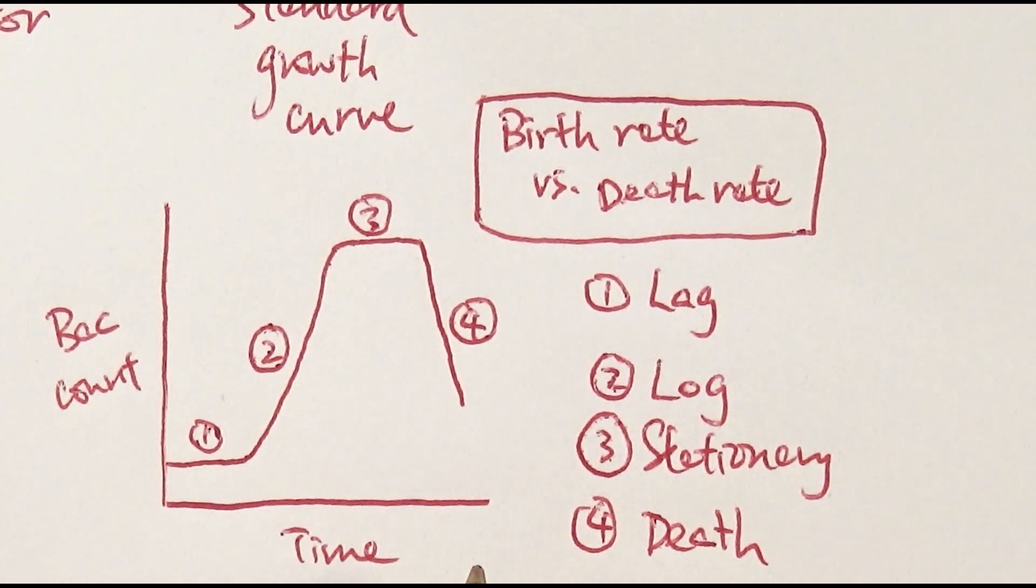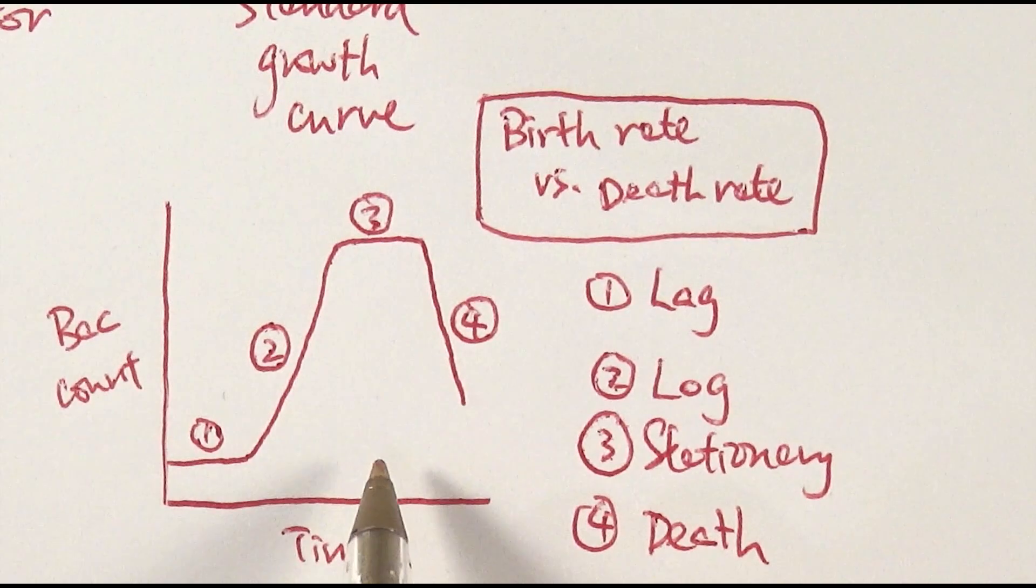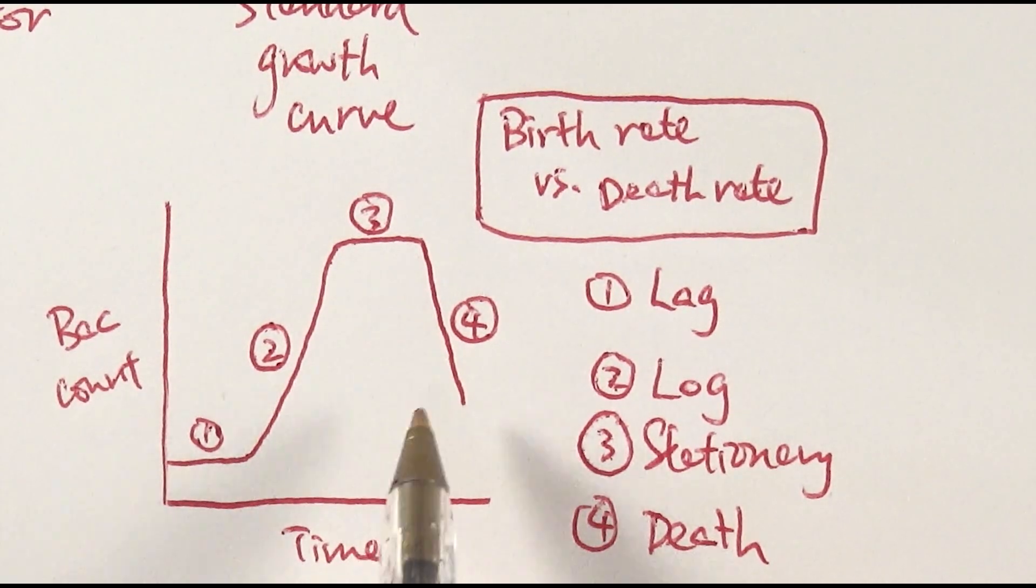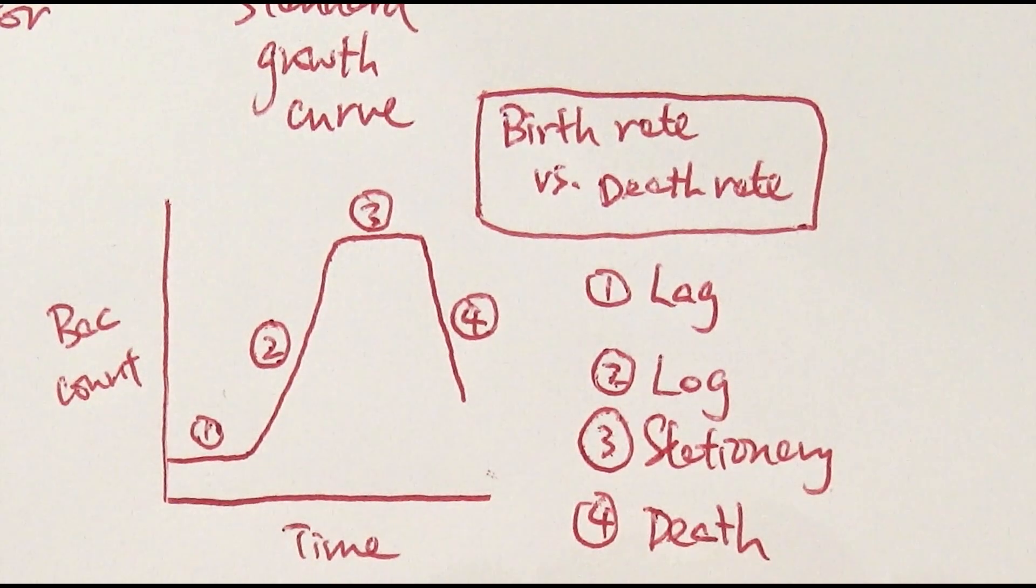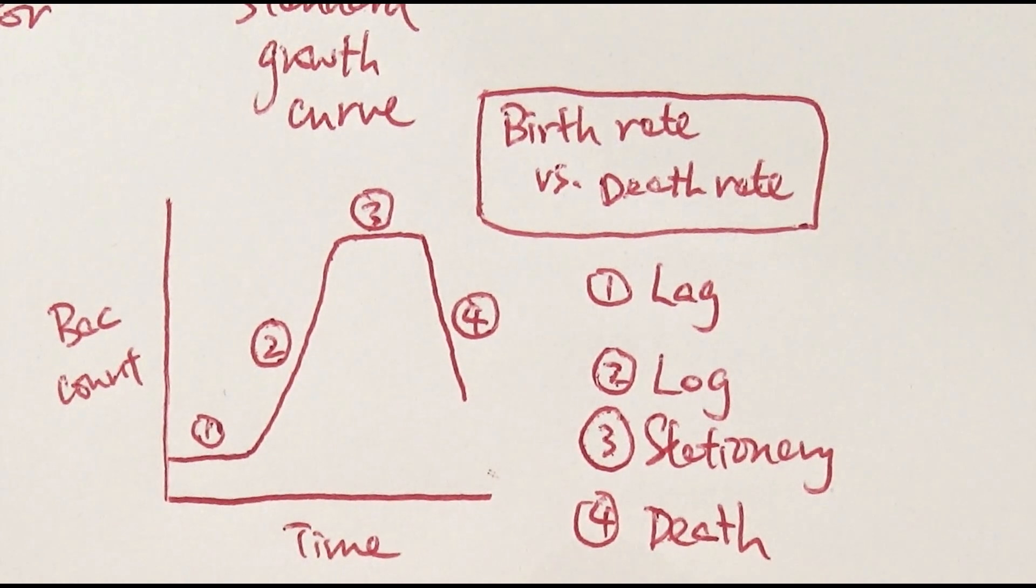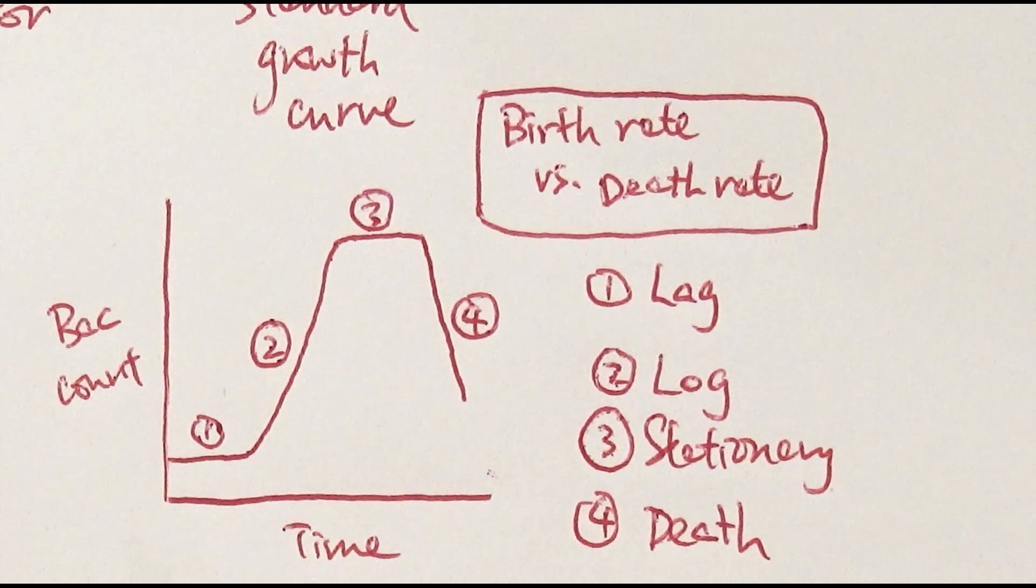This usually describes a batch fermentation. If it's in a continuous one, you'll probably make sure you maintain it so you can keep getting stuff from it. You must make sure you know how to describe and explain the graph if they give it to you by comparing birth and death rate.